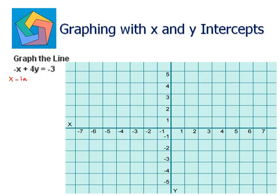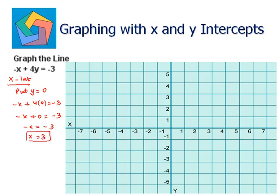For the x-intercept, we put y as 0. So the equation becomes negative x plus 4 times 0 is equal to negative 3. That gives negative x plus 0 equals negative 3, so negative x equals negative 3. Multiplying both sides by negative 1, we get x equals 3. So the x-intercept becomes 3 comma 0.